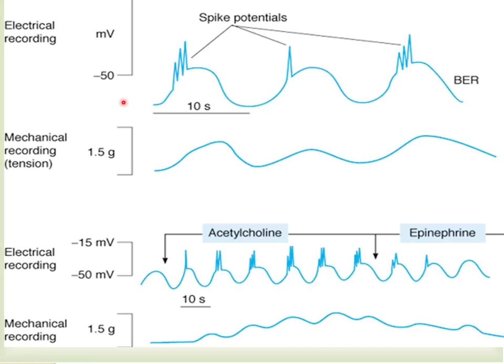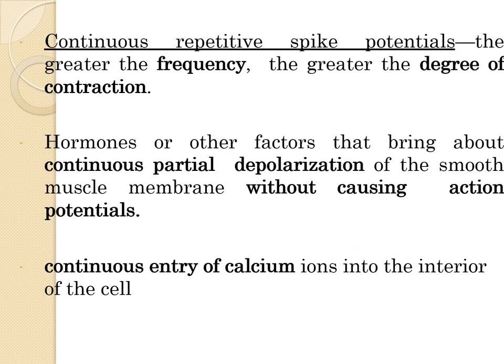This picture shows spike potentials — the normal basic electrical rhythm of the GI tract — and the corresponding mechanical recording. Under the effect of acetylcholine and epinephrine, there is an increase in the number of spike potentials and increased mechanical contraction. Continuous repetitive spike potentials result in greater frequency and degree of contraction. Hormones and other factors can bring about continuous partial depolarization of the smooth muscle membrane, causing continuous entry of calcium ions into the cell interior.